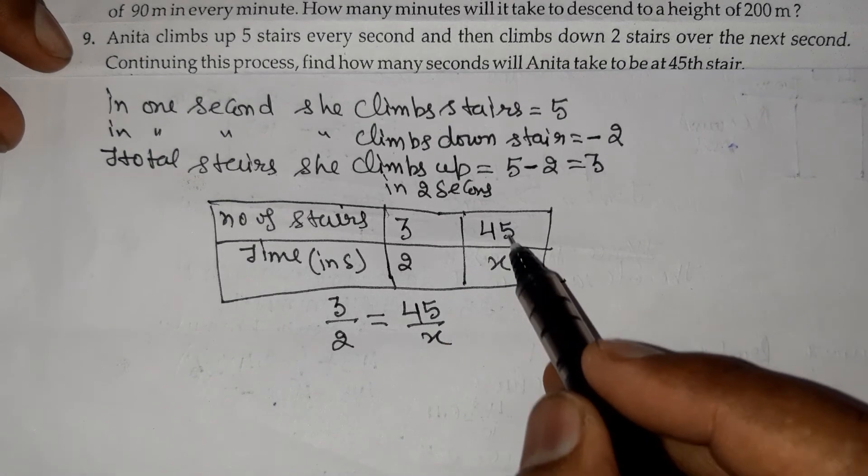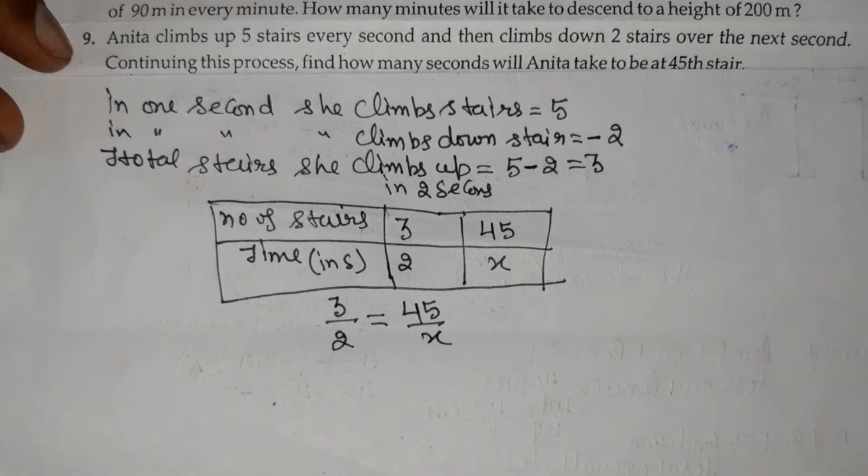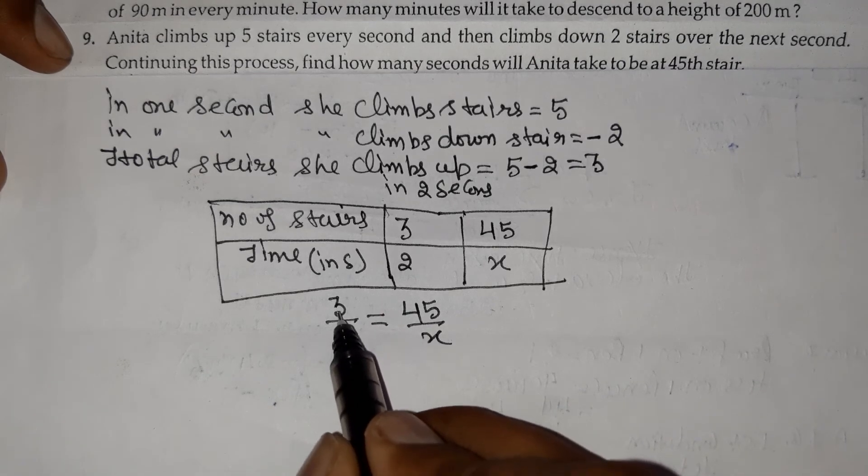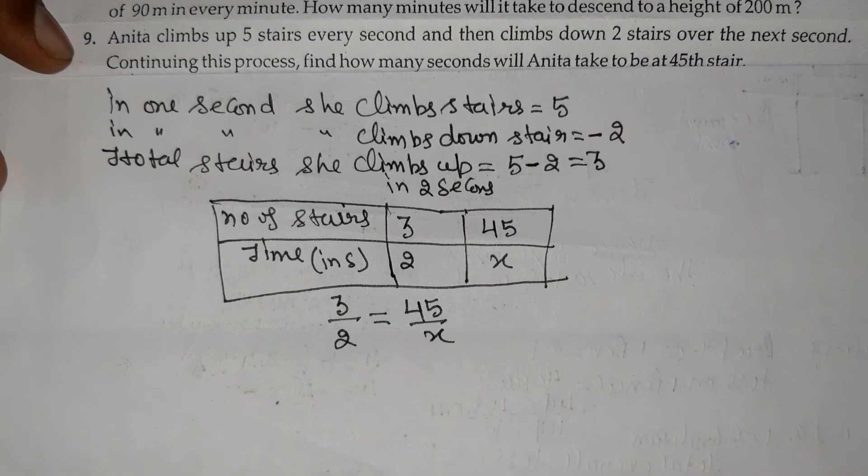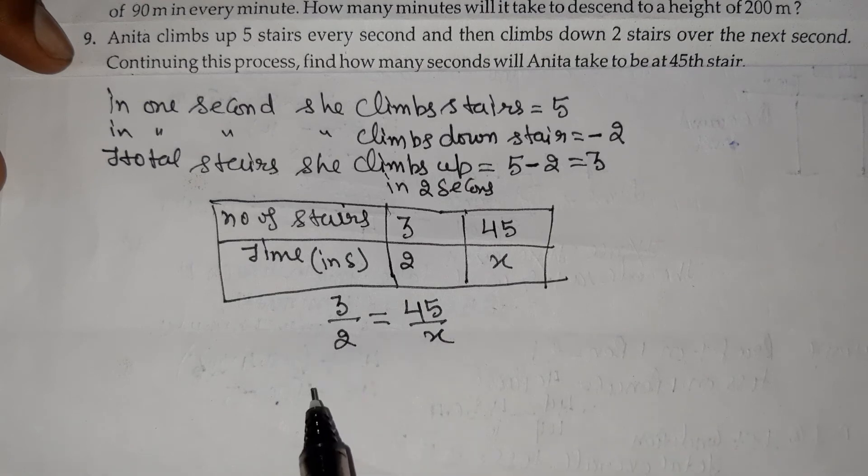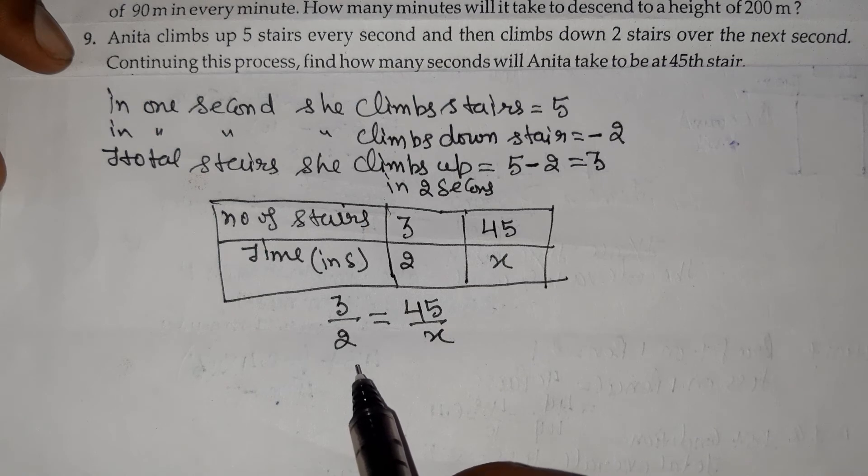You can use the unitary method if there's confusion about setting up the proportion. What we'll do: divide 45 by 3, which gives us 15.